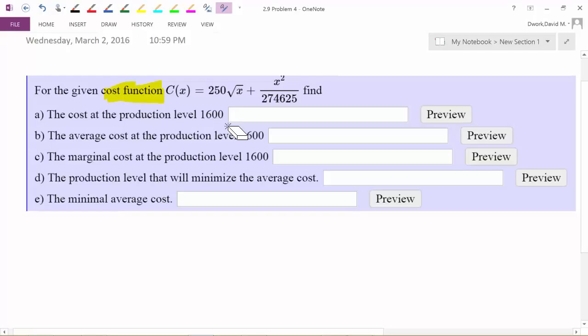Stop and think about units. What are the units on a production level of 1600? Well that's just units, like how many things we're making, and isn't that just what X stands for? So all we're going to do is, on this problem, everywhere we have an X, we're just going to replace it with 1600.